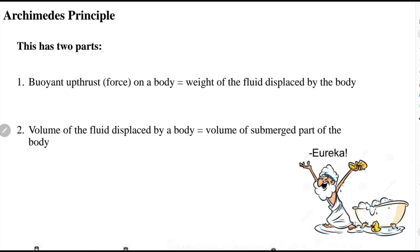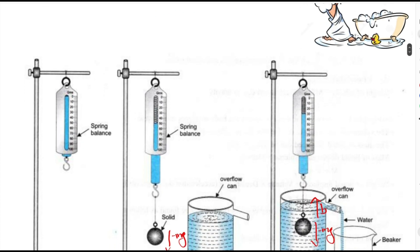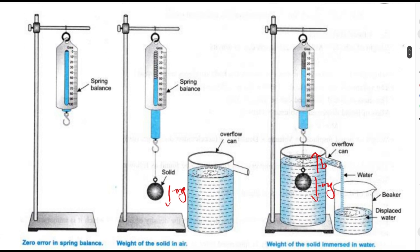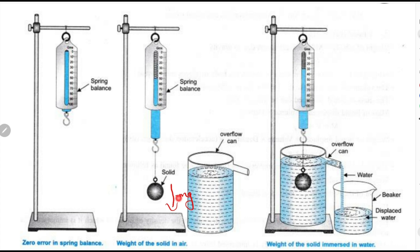We can demonstrate Archimedes principle with a simple experimental setup. This requires a spring balance, a solid object, and an overflow can, along with a small beaker for collecting overflowed water. Take the weight of the solid object in air. The force acting on it is the body's weight in the downward direction, where the negative sign represents downward direction, M is the mass of the body, and G is the acceleration due to gravity at that place.